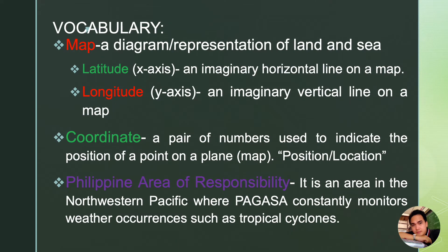For you to easily understand this concept, please bear in mind the following terms. A map is a diagrammatic representation of land and sea. A map usually contains a latitude and a longitude. Latitude is an imaginary horizontal line on a map, while longitude is an imaginary vertical line on a map. A coordinate is usually a pair of numbers used to indicate the position of a point on a plane.